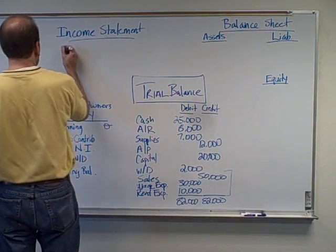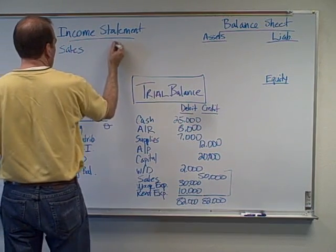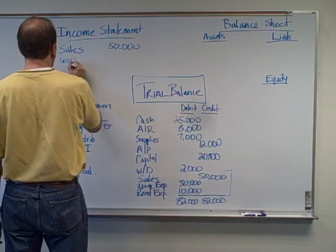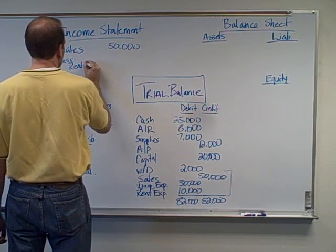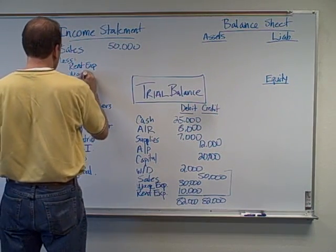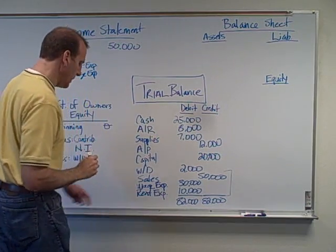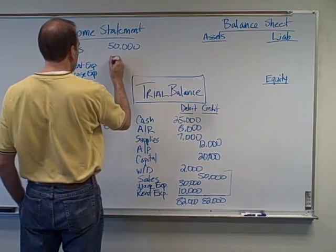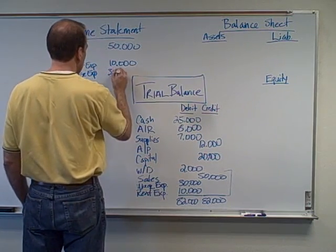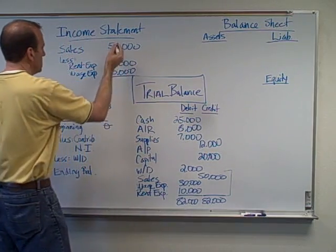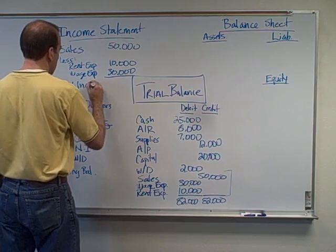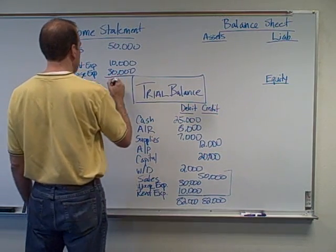I'm going to put down sales of $50,000, and then we'll have less rent expense and wage expense. Rent expense is the bottom one, $10,000, and the wage expense is the top one, $30,000. When we subtract our expenses from our sales, we get net income of $10,000.